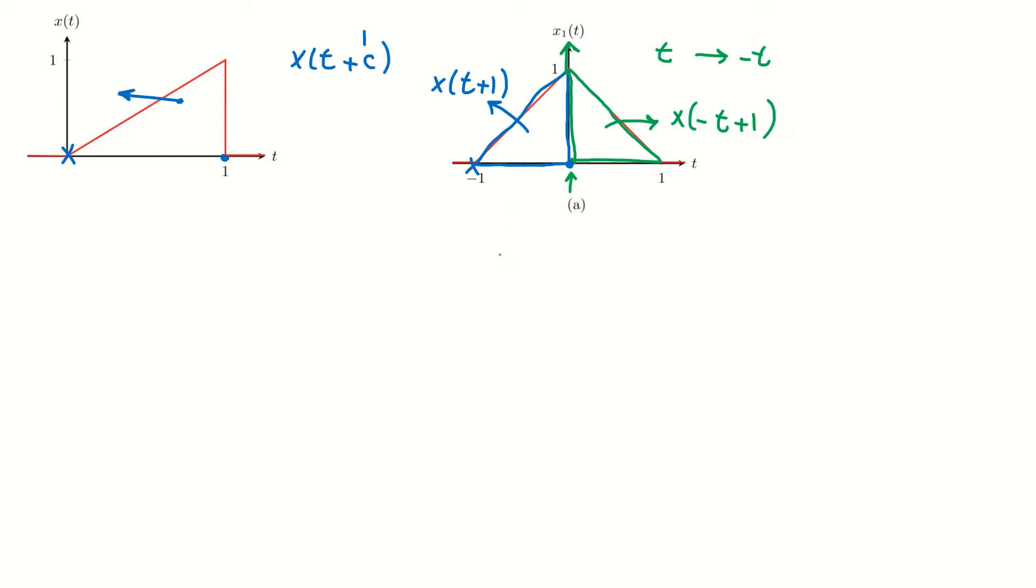So I can say x1(t)—now let me use a different color—I can say x1(t) equals the left part, which is x(t + 1), plus the right part, which is x(-t + 1). Okay, so this is part (a).